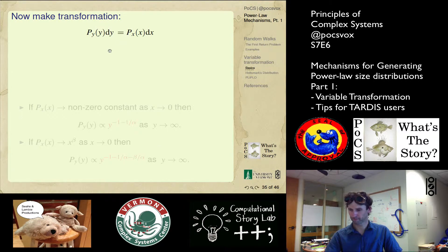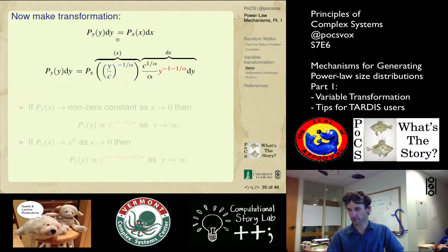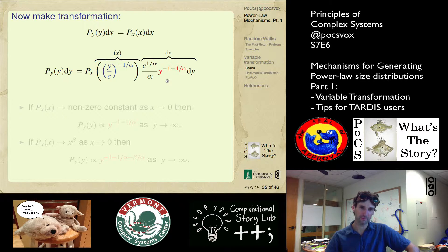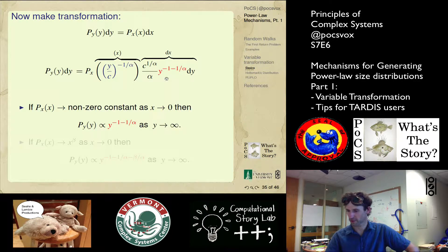Now we're going to make our transformation: P of y dy equals P of x dx. So we throw our x in here. We put our dx, the blob we just found, and here's the y part of it we're excited about. A couple of things could happen. This is a great big blob, but basically it depends on this function. And you can see there's already a power law size distribution situation occurring over here.